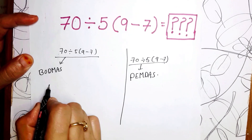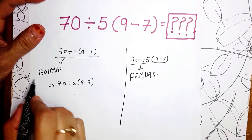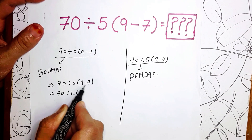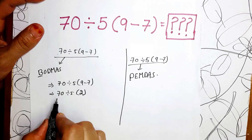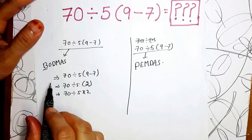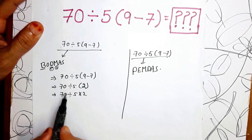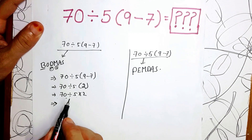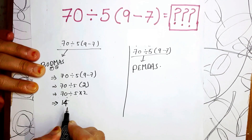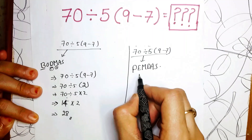Our question is: 70 ÷ 5(9 − 7). First, using BODMAS — we do the brackets first: 9 − 7 = 2, so we get 70 ÷ 5 × 2. According to BODMAS, Division comes before Multiplication, so: 70 ÷ 5 = 14, then 14 × 2 = 28. So the BODMAS answer is 28.